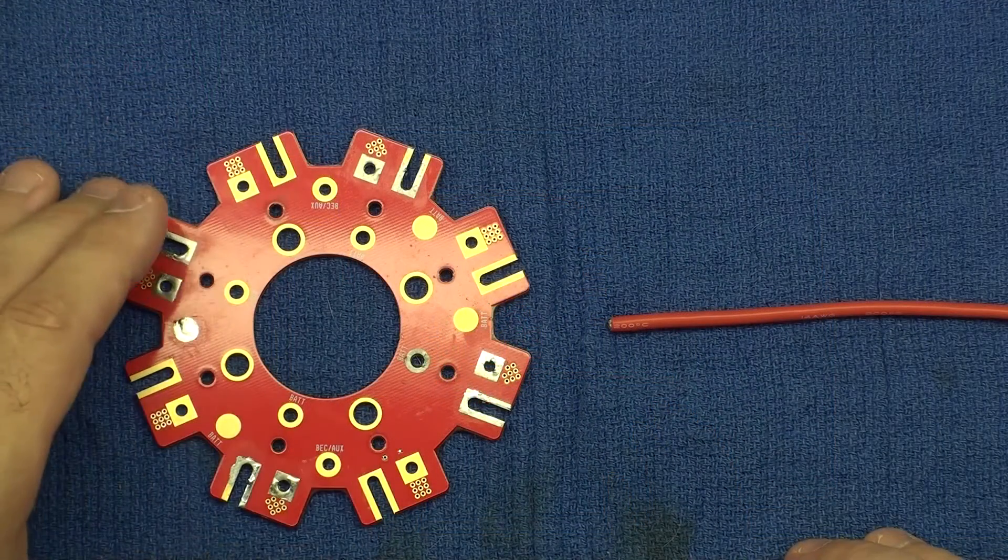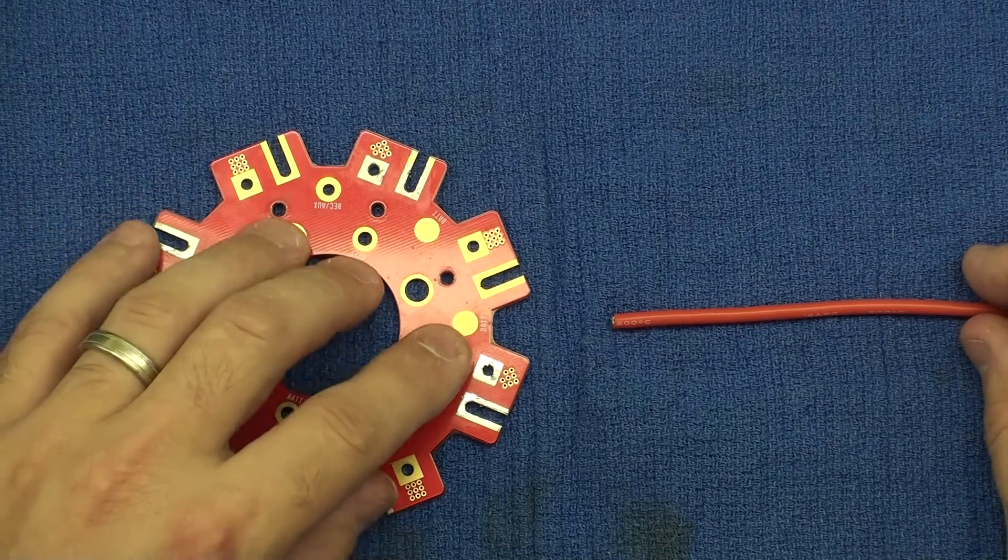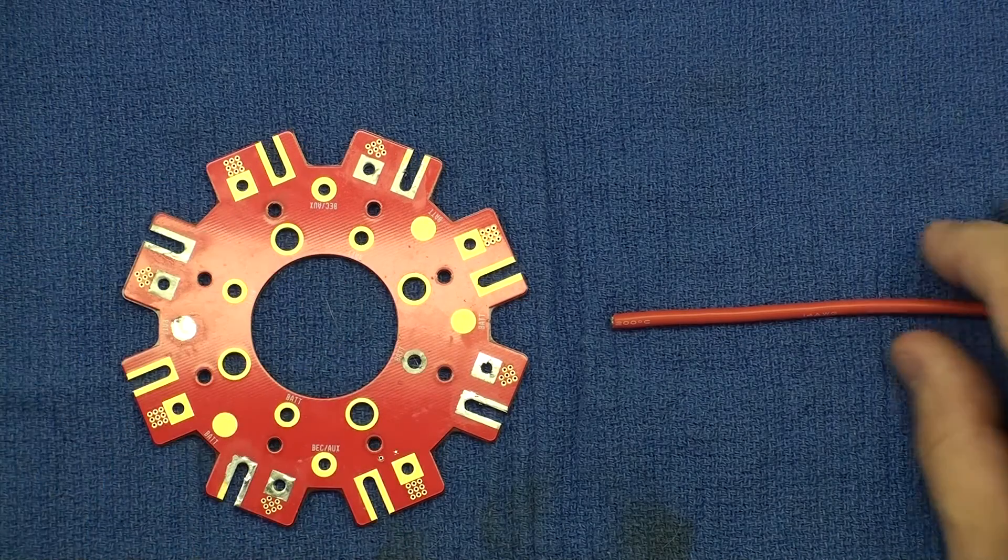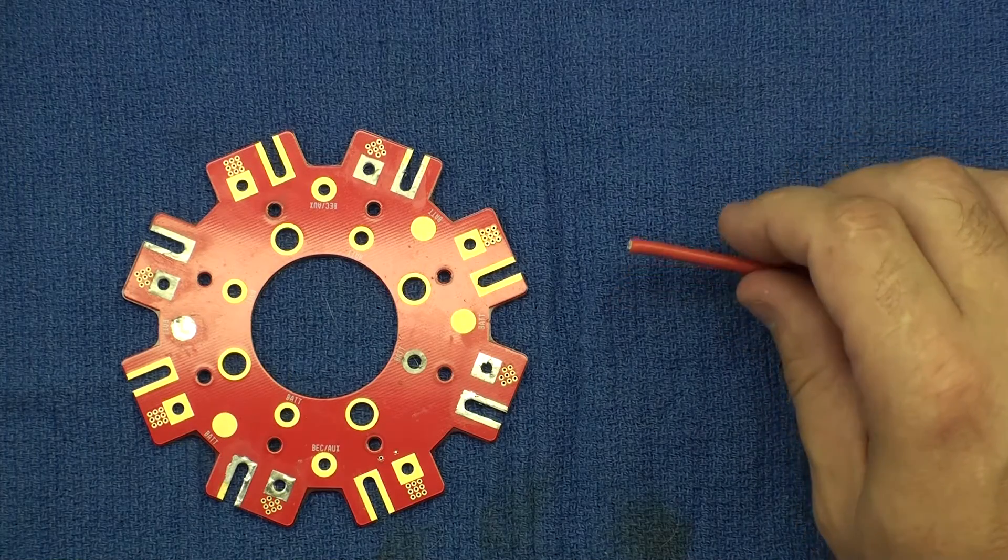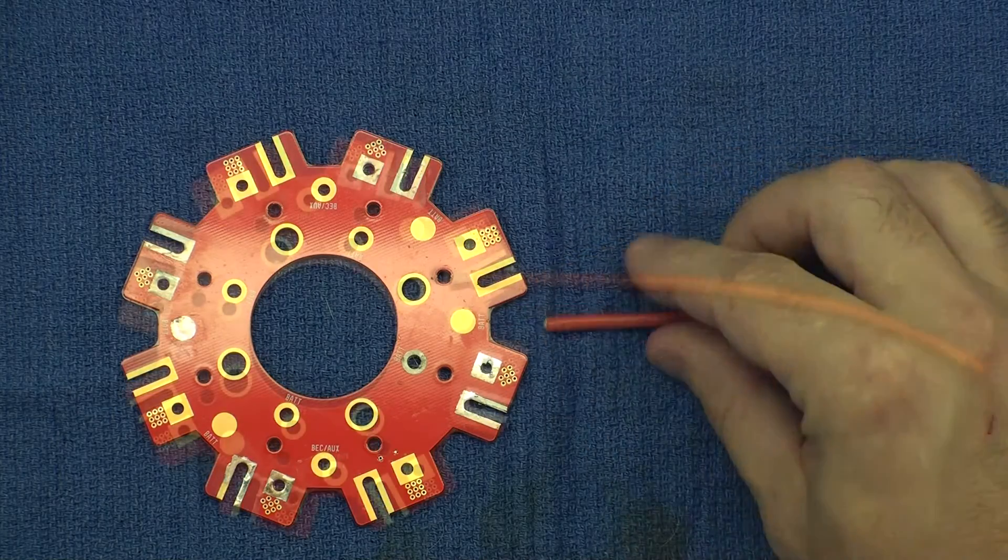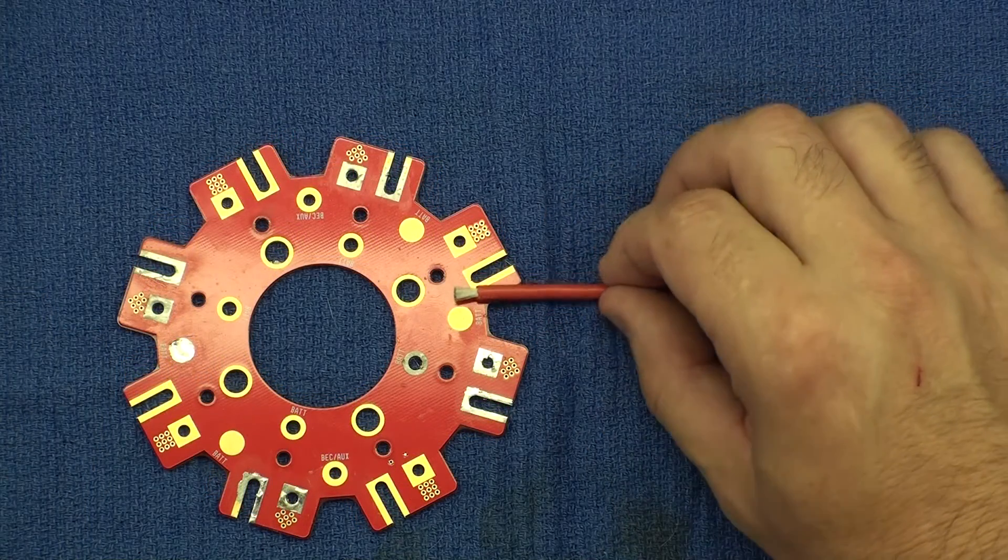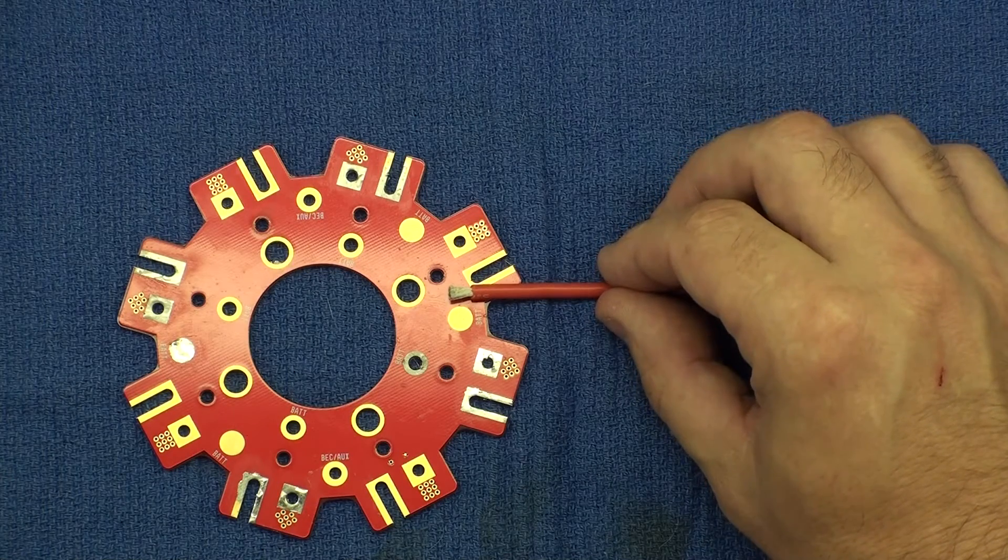Our first soldering job, I'm going to solder a 14 gauge wire onto a power distribution board pad. I'm going to strip the wire with a pair of wire strippers. I want the exposed wire to be the width of the pad itself. With our wire stripped to the proper width, we'll take our flux pen and apply flux to both the pad and the wire.